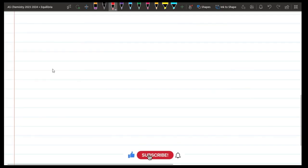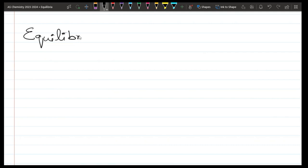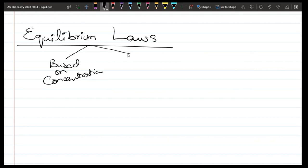The next thing we have is Equilibrium Laws. You will have two laws: based on concentration, we call it Kc, and based on partial pressure, Kp.